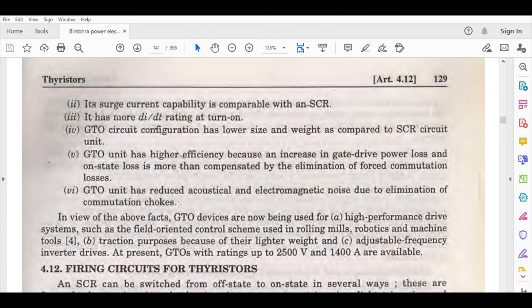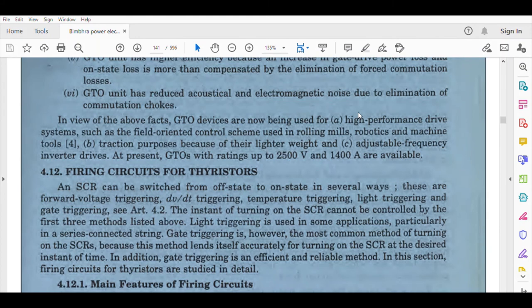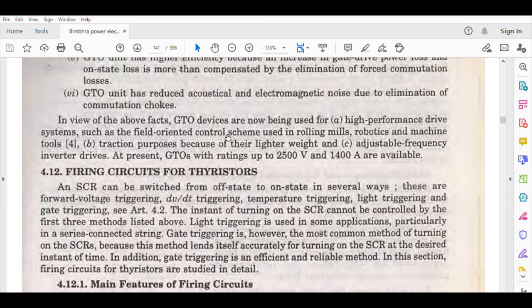In view of these effects, GTO devices are now being used for high performance drive systems, such as field-oriented control, robotics, machines, traction purposes, and adjustable frequency inverter drivers. Ratings available are 2500 volts and 1400 amperes.